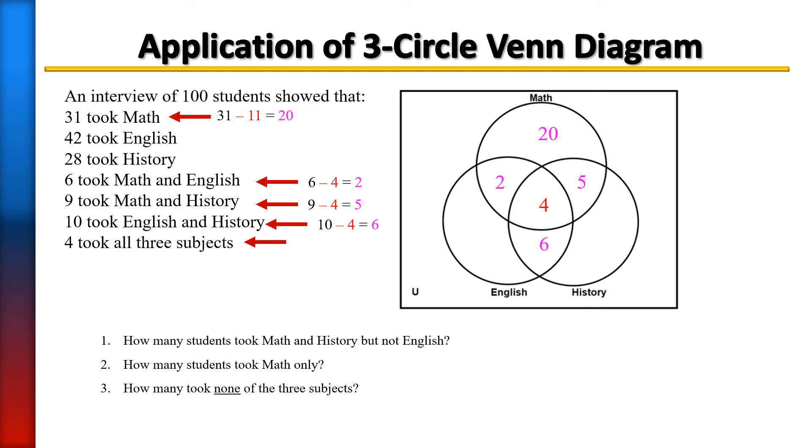We're going to do the same for the English only people. There were 42 that took English. Of the 42 that took English, we have to see how many are already in there to find out the English only. Right now there's 2 plus 4, which is 6, 6 plus 6 is 12. So there are 12 in there already. We're going to subtract 12 from 42 and that will give us the 30 only, so 30 students took English only.